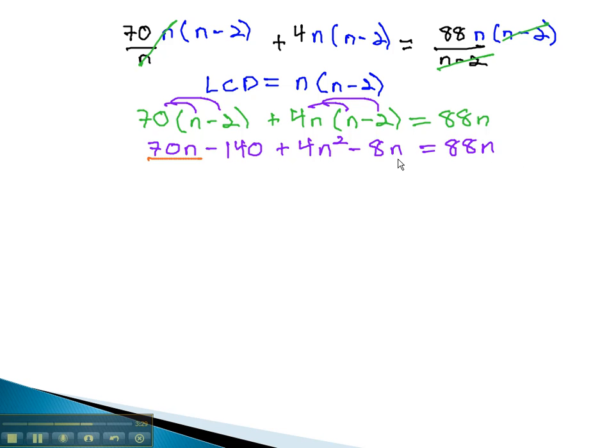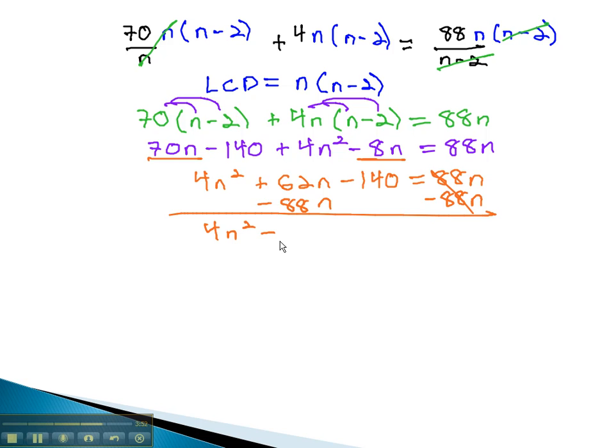We can combine like terms on the n's and put things in order to get 4n squared plus 62n minus 140 equals 88n. Subtracting 88n from both sides will make the equation equal to 0. 4n squared minus 26n minus 140 equals 0.